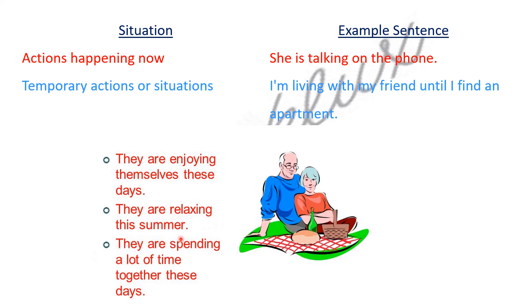Next is they are relaxing this summer. This summer they are relaxing — maybe it is their break time or maybe they are on vacations, so this is also a temporary situation. Next sentence is they are spending a lot of time together these days. In this sentence, we have defined 'these days' — this activity was not in the past, and I don't know if it will happen in the future or not, but it is happening in the present. Then we will use Present Continuous Tense.